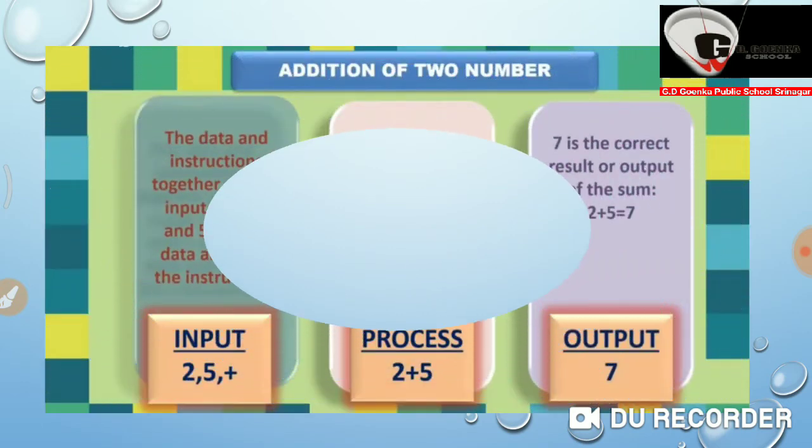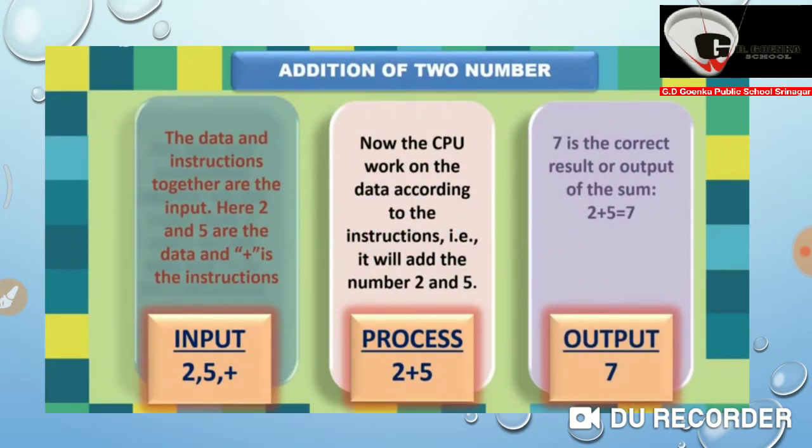So dear students, let us understand addition of two numbers with the help of IPO cycle. For input, the data and instruction together are the input. Here, 2 and 5 are the data and plus is the instruction. So they together make an input.